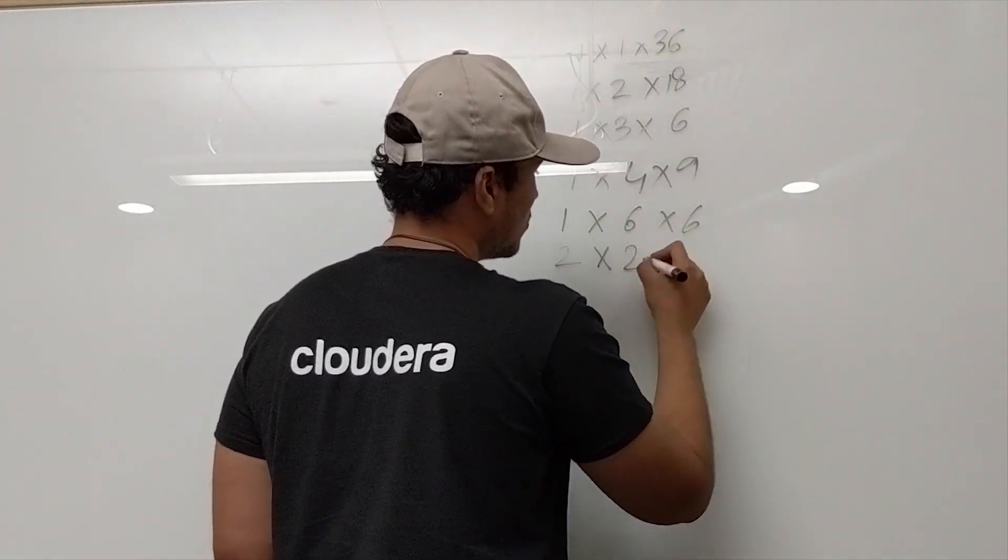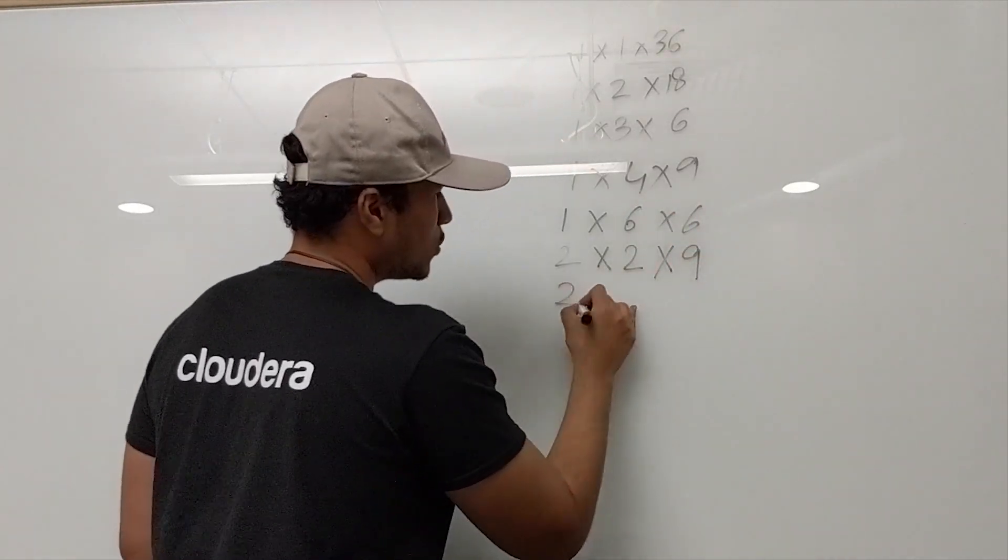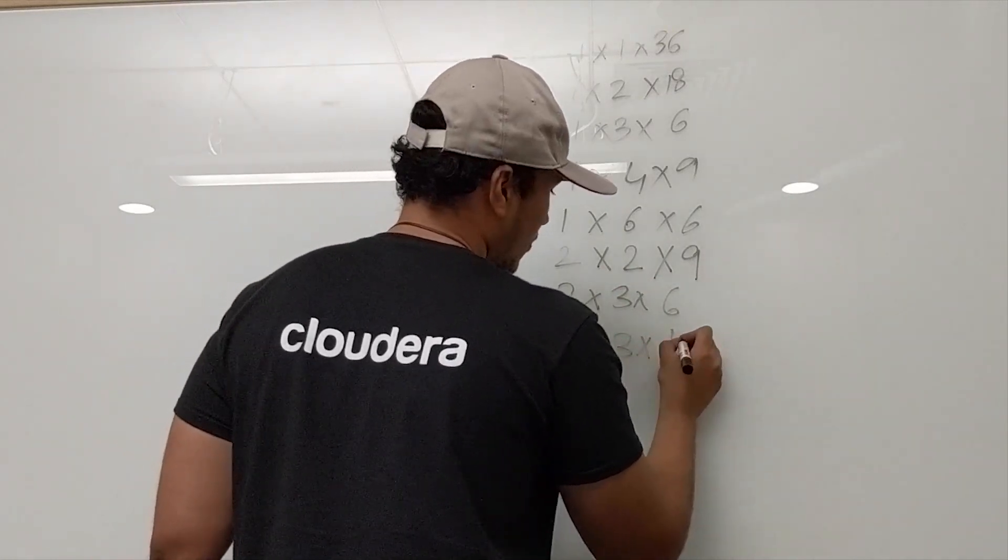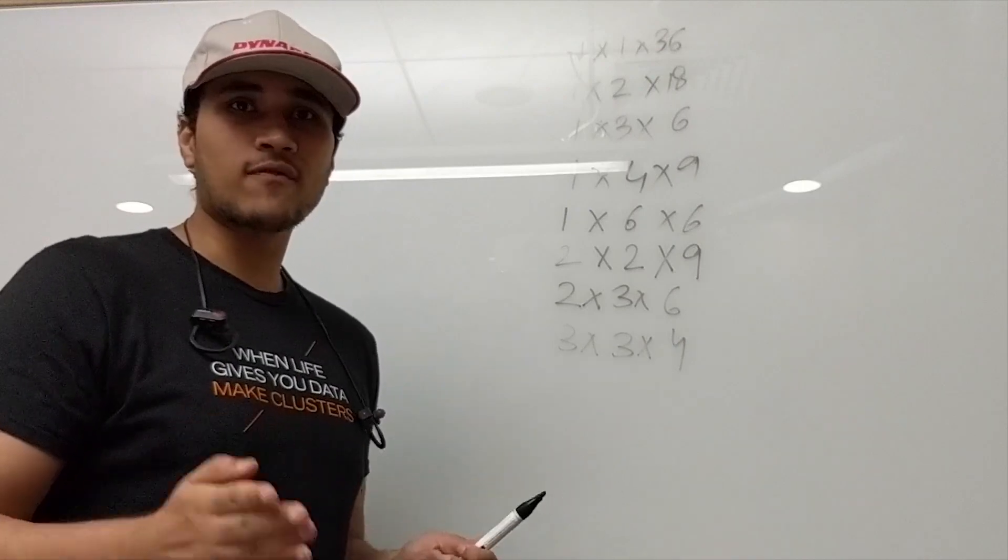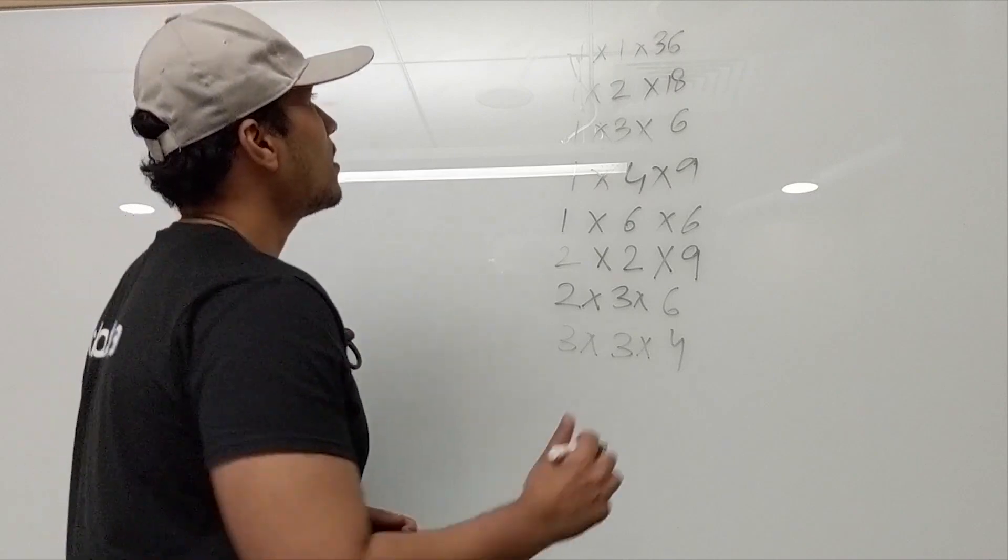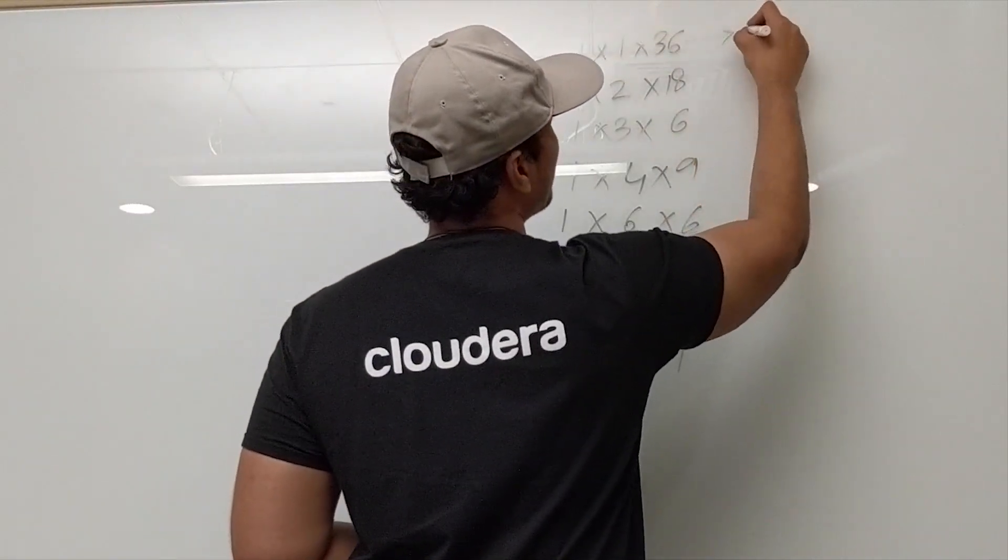2 into 2 into 9. 2 into 3 into 6. 3 into 3 into 4. And three cousins of Gaurav can have one of the possible triplets in terms of their ages. So let's also write the sum of each of the ages.